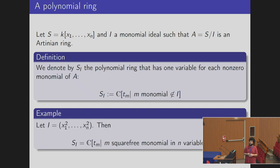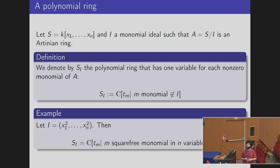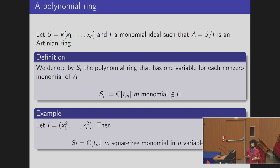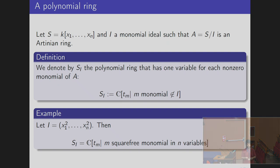For example, if you like square-free monomial ideals: when you take I to be just the squares of the variables, this new polynomial ring is going to be a polynomial ring over the complex numbers where you have one variable for each square-free monomial in n variables.